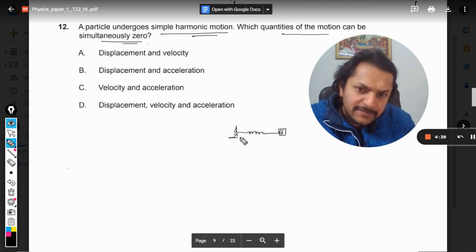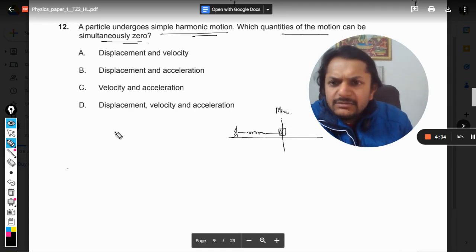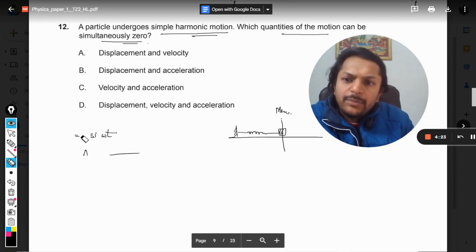So this is the mean position. As per SHM is concerned, if you know these equations like y equals a sine omega t, and then there is the velocity which is a omega cos omega t and all that, that becomes part of the higher level.